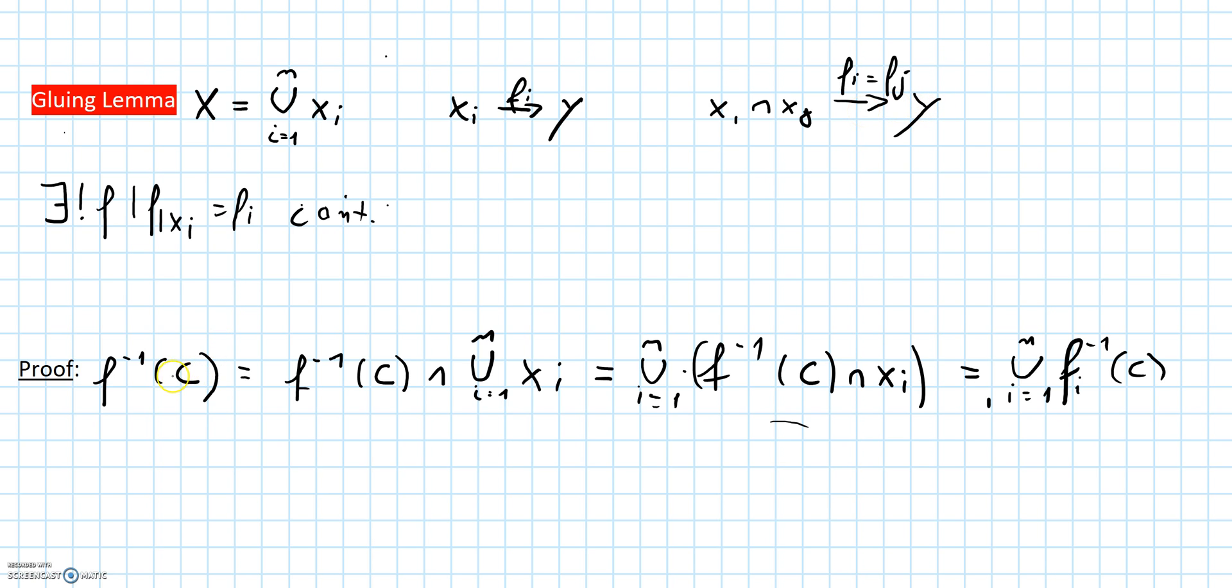And we are going to look at the pre-image of c under the map f. The pre-image of c under the map f can be written as the pre-image of c under the map f intersected with the union of the xi.